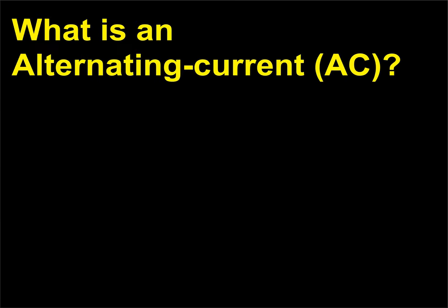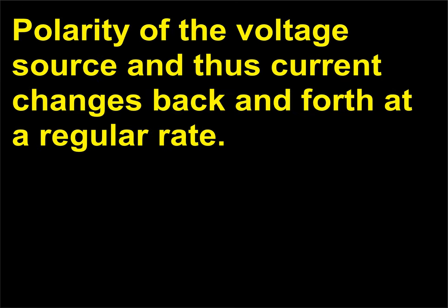What is alternating current (AC)? It is a current in which the polarity of the voltage source, and thus the current, changes back and forth at a regular rate.